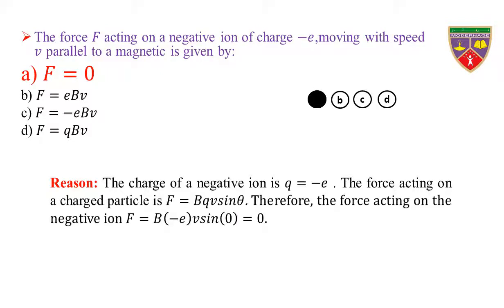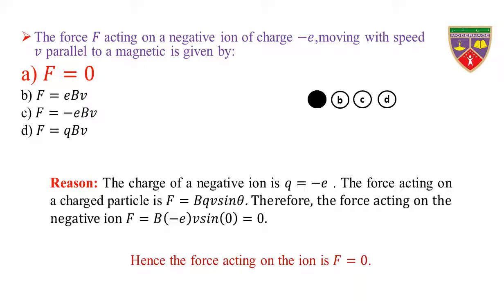Reason: The charge of a negative ion is Q = −e. The force acting on a charged particle is F = BQV sinθ. Since the ion moves parallel to the magnetic field, θ = 0°. Therefore, the force acting on the negative ion is F = B × (−e) × V × sin0° = 0. Hence, the force acting on the ion is F = 0.